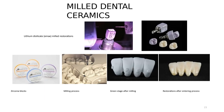In terms of milling, EMAX can also be milled in its green stage, then placed in an oven to be matured or vitrified, where it shrinks to the correct size and gains the color intended to match the natural dentition.